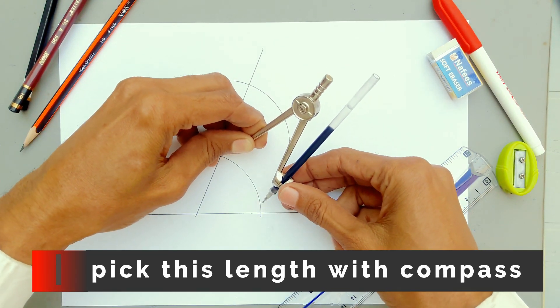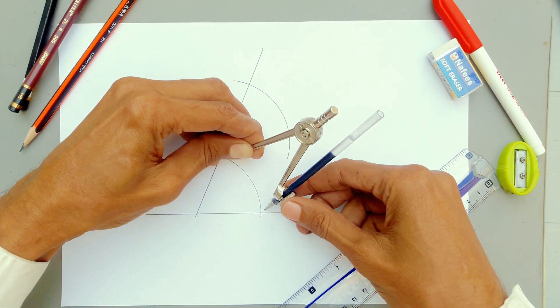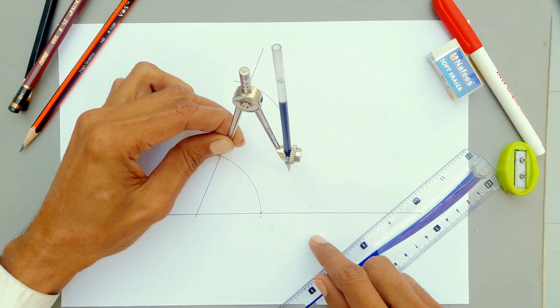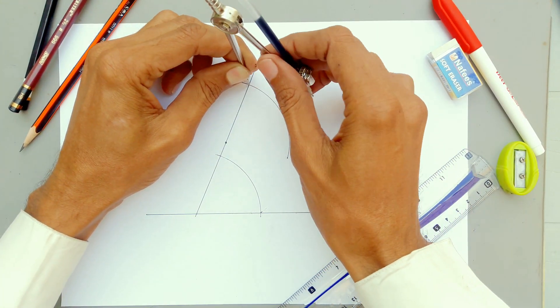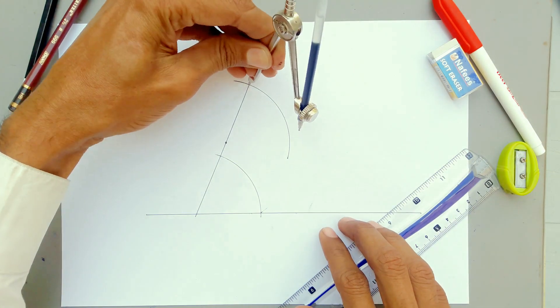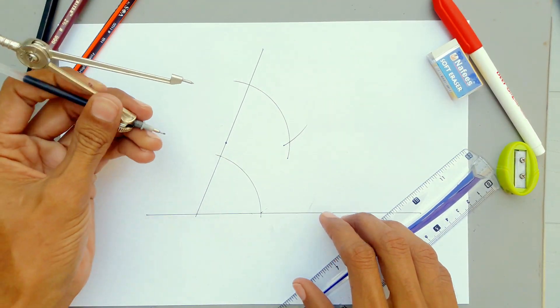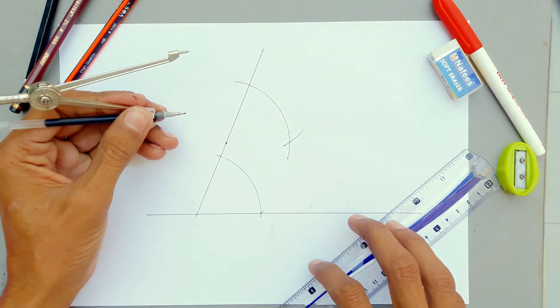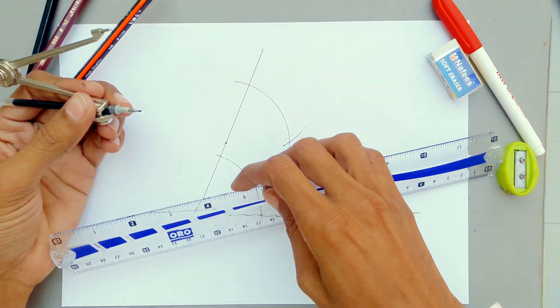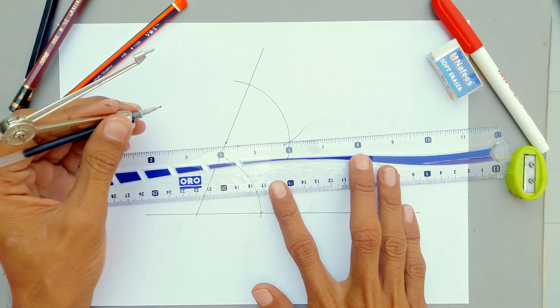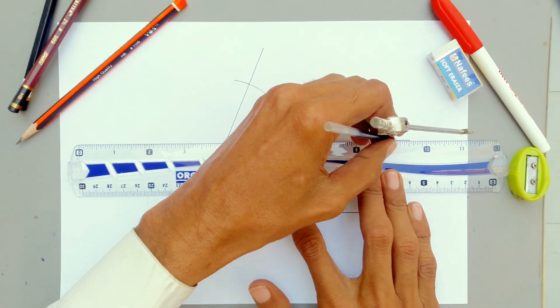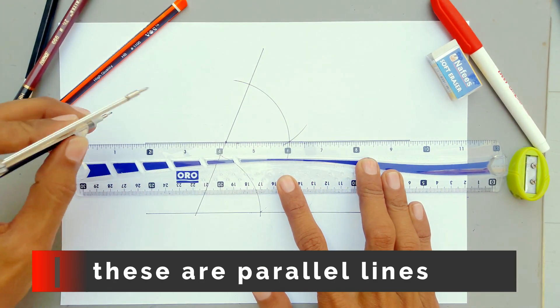Pick this length with compass. These are parallel lines.